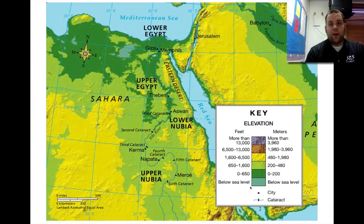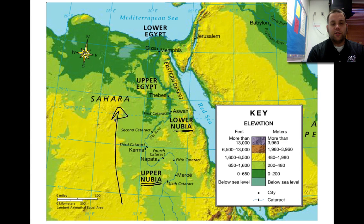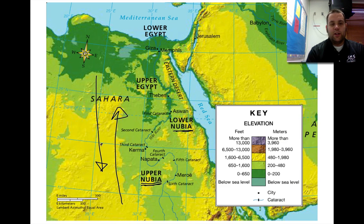Here's our map. We can see Nubia — lower Nubia and upper Nubia. Upper Nubia is actually below lower Nubia on the map because, again, the Nile flows in this direction. Most rivers flow from north to south, or east to west or west to east, depending on elevation. Here, a higher elevation is actually down in this region — somewhere around 1,600 to 6,500 feet — and there's more of that elevation here than further down.